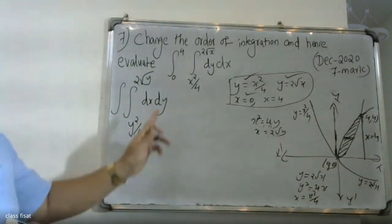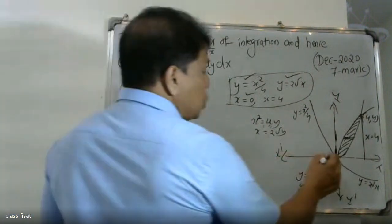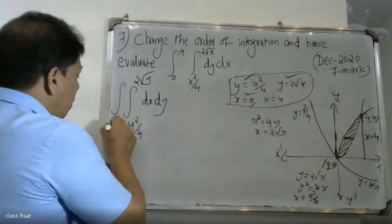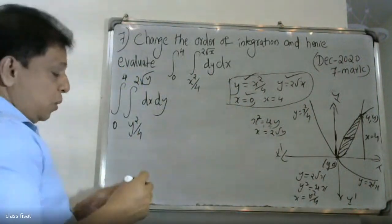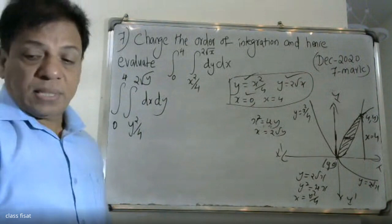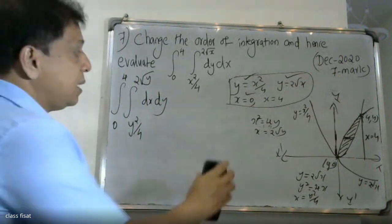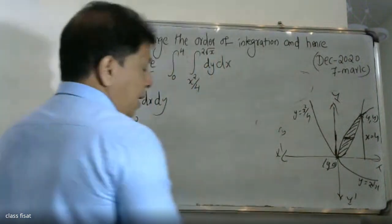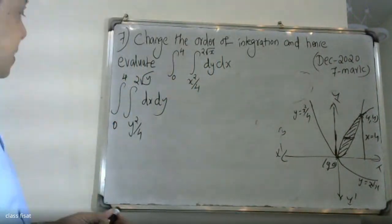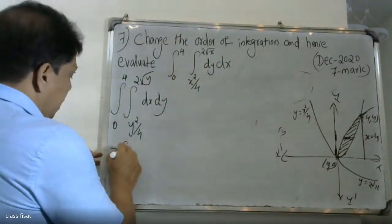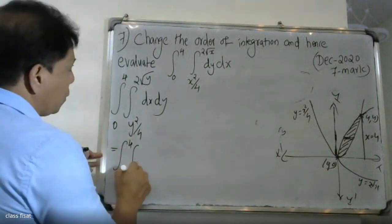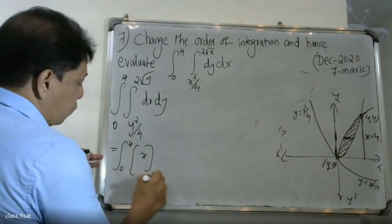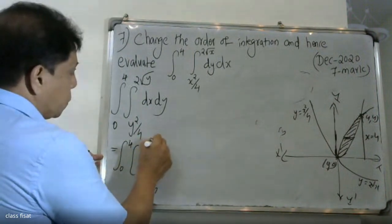The y-limits are 0 to 4. For changing order of integration, we take a strip parallel to the x-axis. The lower y-limit is 0 and the upper y-limit is 4. The x-limits become from y²/4 to 2√y. The integral becomes integral from 0 to 4, from y²/4 to 2√y, dx dy.